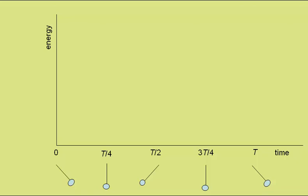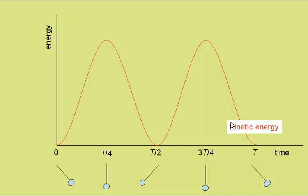So first, plotting values for the kinetic energy, they go something like this. Zero kinetic energy when the pendulum is at maximum displacement, and maximum kinetic energy when the pendulum is travelling through the bottom of its swing. I'll label this kinetic energy.